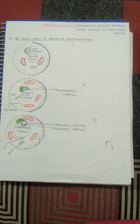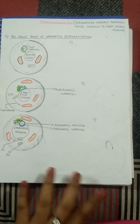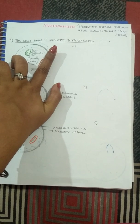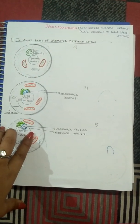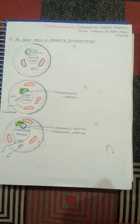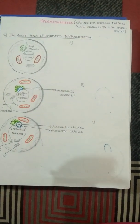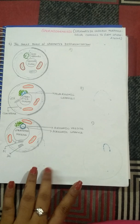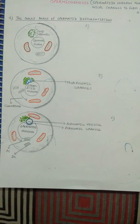In spermiogenesis, there are morphological changes in the sperm structure. There are mainly four phases: the first phase is the Golgi phase of spermatid differentiation, which has three further stages. The second phase is the cap phase, the third is the acrosomal phase, and the fourth is the maturation phase. After the maturation phase, spermiation occurs, during which mature spermatozoa are released into the seminiferous tubules.